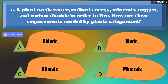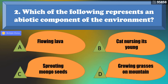The correct answer is letter A — abiotic. Number 2: which of the following represents an abiotic component of the environment? The correct answer is letter A, flowing lava.